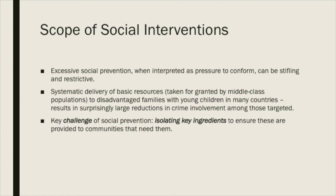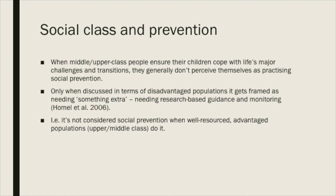A quick comment on prevention and social class: when middle or upper class people ensure their children cope with life's major challenges and transitions, they generally don't perceive themselves as practising social crime prevention. It's only when this gets discussed in terms of disadvantaged populations that it gets framed as needing something extra, requiring research-based guidance and monitoring. In other words, it's not considered social prevention when well-resourced populations do it, but when disadvantaged populations are engaged in such programs, we call it social crime prevention.